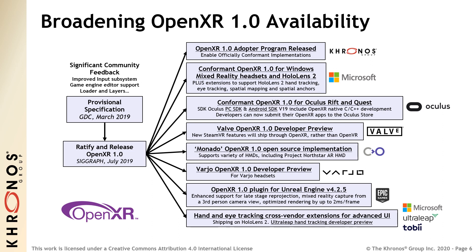With version 4.2.5, the Unreal Engine from Epic has enhanced its support for OpenXR, including optimizing reprojection and rendering. Working group members including sensor vendors such as UltraLeap and Tobii have developed hand and eye tracking OpenXR extensions that are already shipping on Microsoft's HoloLens 2.